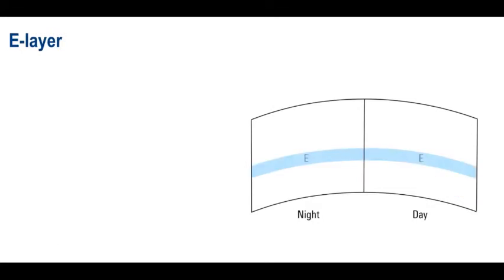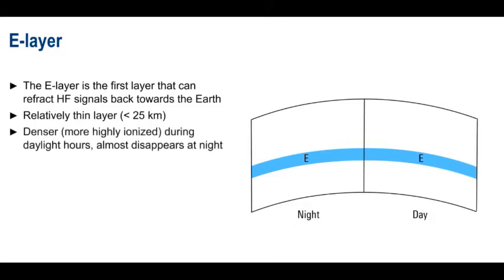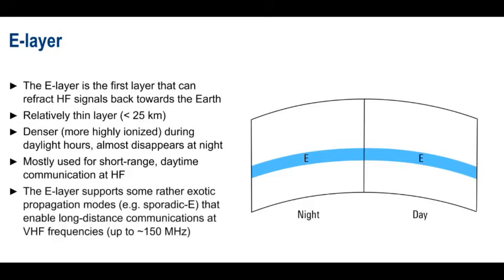The next highest layer, the E layer, is the lowest layer of the ionosphere that can refract HF signals back towards the Earth, and is the lowest layer that supports skywave communications. Compared to the other layers, it is relatively thin, usually about 10 kilometers or so. The E layer is much less dense, that is ionized, during the day, but unlike the D layer, it doesn't completely disappear at night. Aside from mostly short-range daytime communications, and a few other special cases, E layer propagation is not commonly found in HF. Note however that at VHF, the E layer is very important, and supports some rather exotic and less predictable propagation modes, such as sporadic E. And these modes make long distance communication over thousands of kilometers possible, even at the relatively high frequencies of VHF.